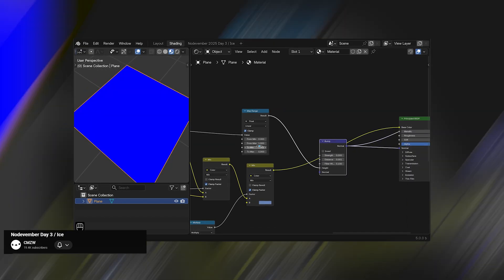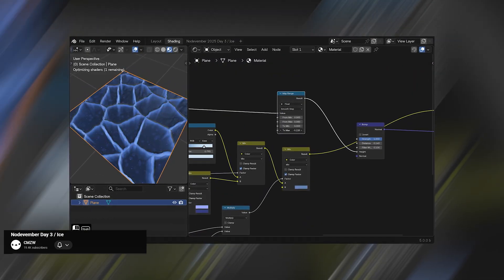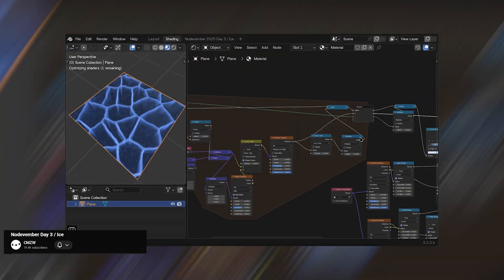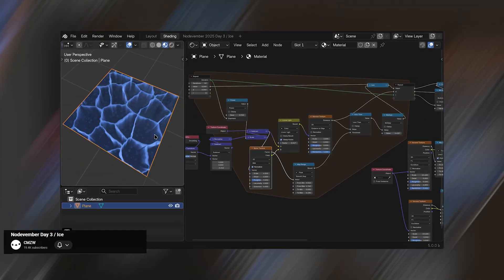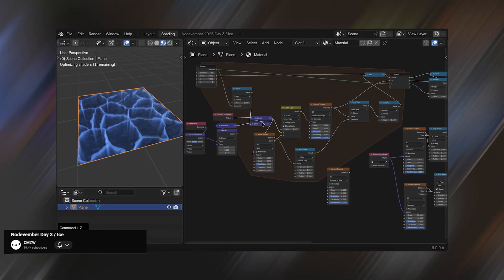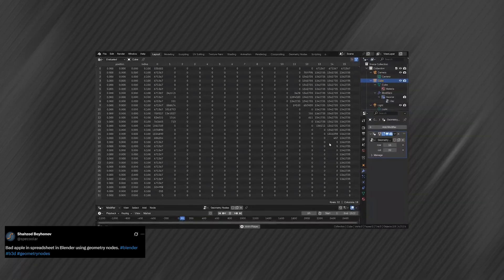In Blender 5.0 we're also seeing bits of geometry nodes bleeding into the shader editor. Things like the repeat zone are now available which means you can create ridiculously complex materials like this frozen ice shader with parallax depth. It looks unreal but the setup is actually clean once you see it broken down. CMZW has a great tutorial if you want to dive in and this demo is by Spee Cooler.